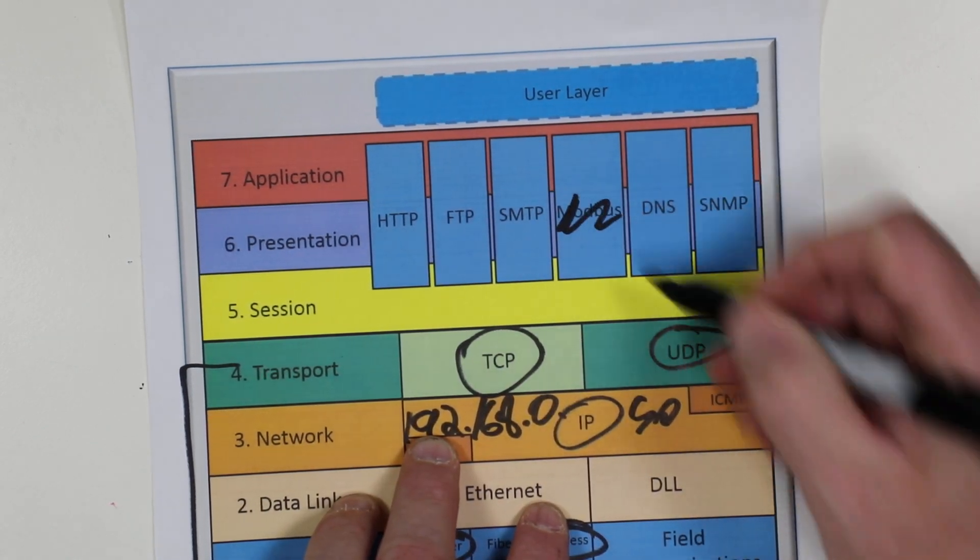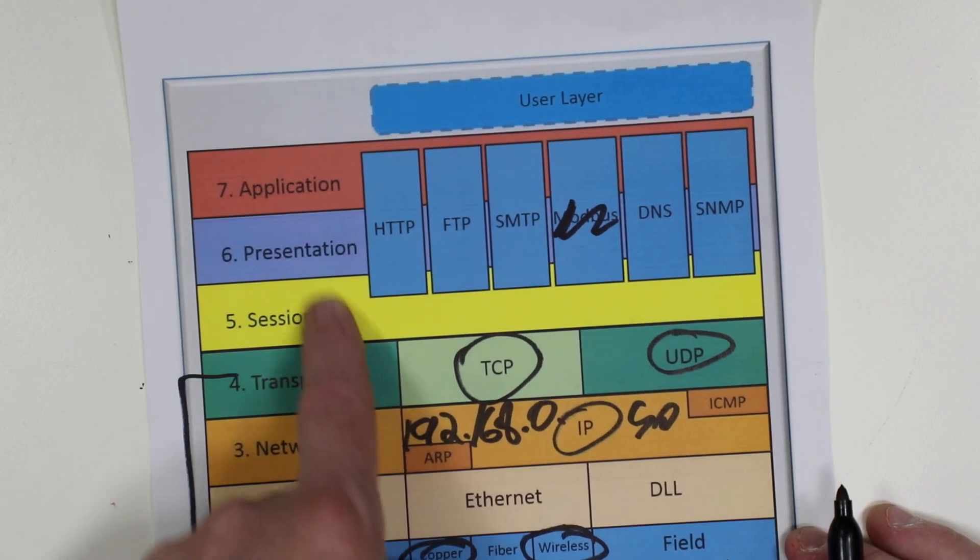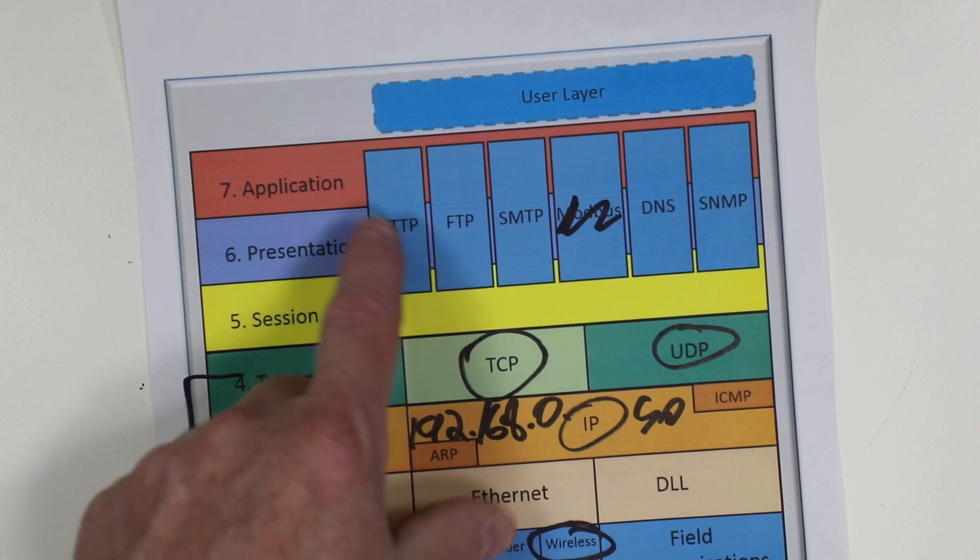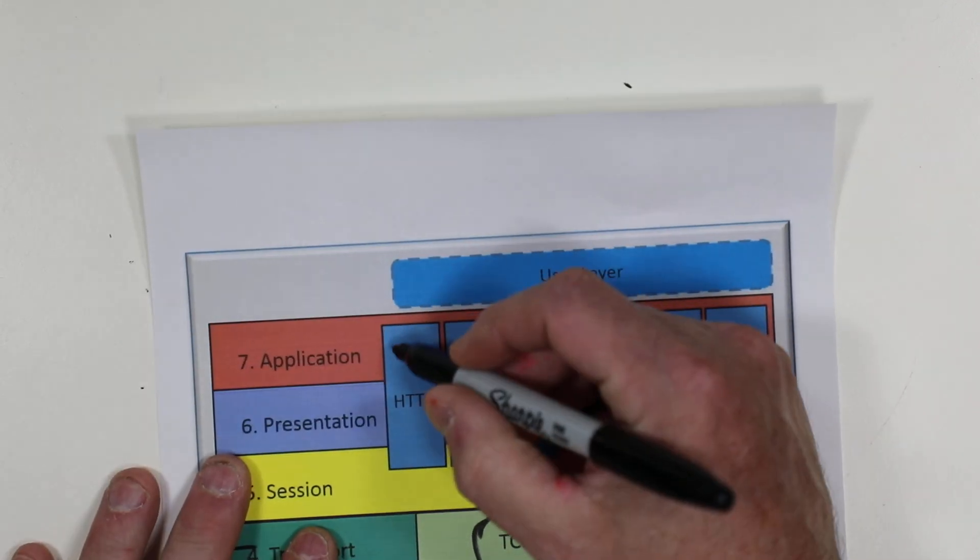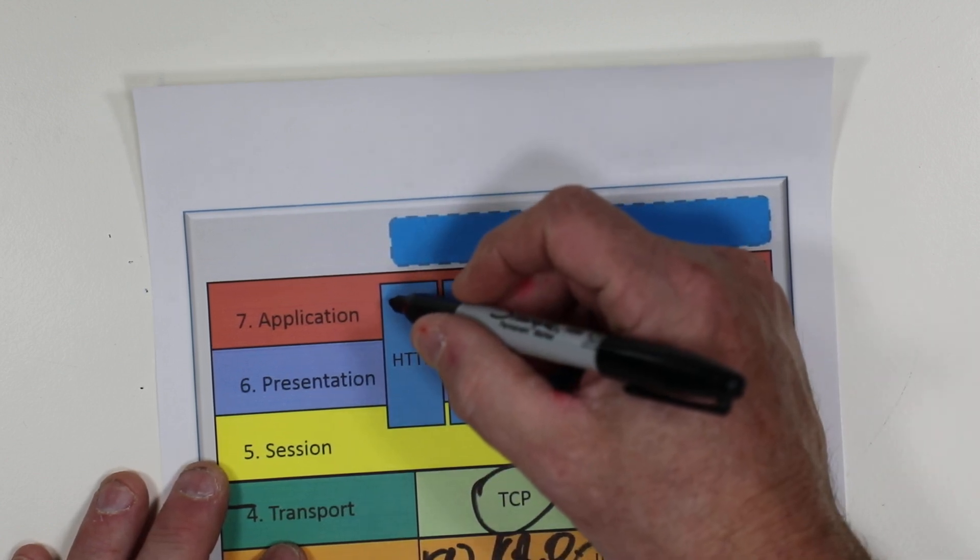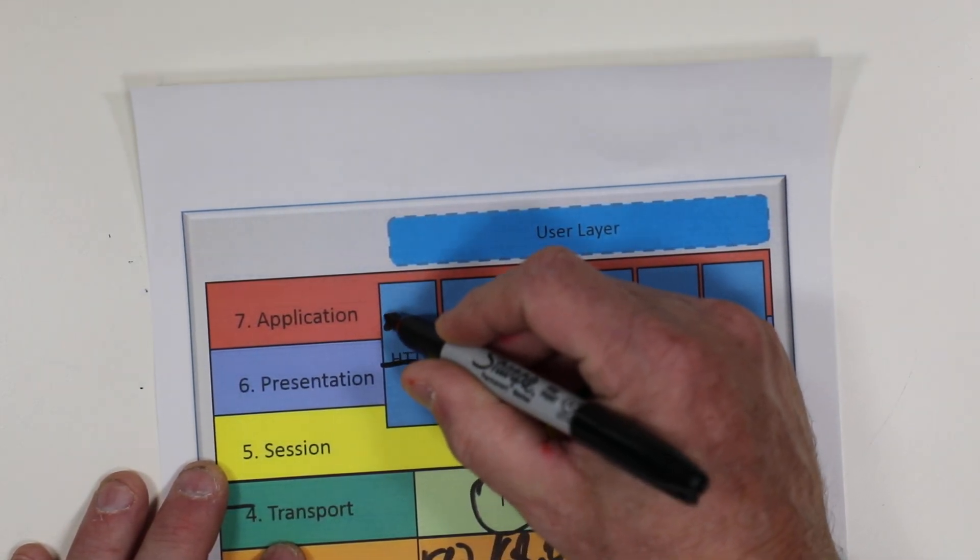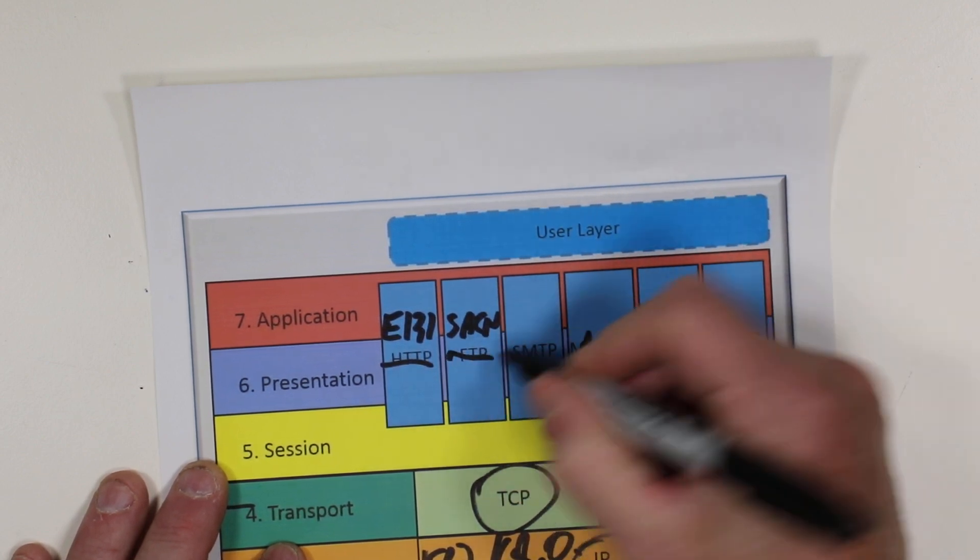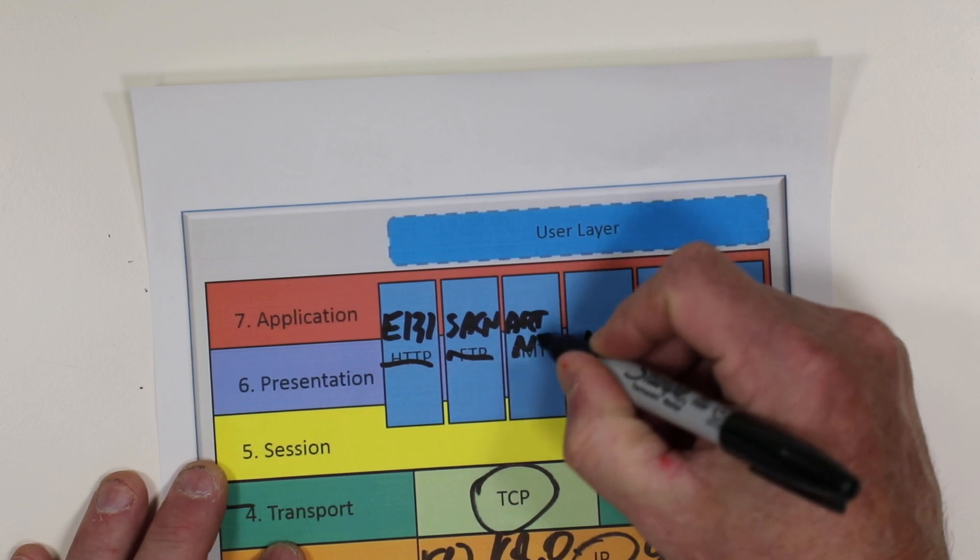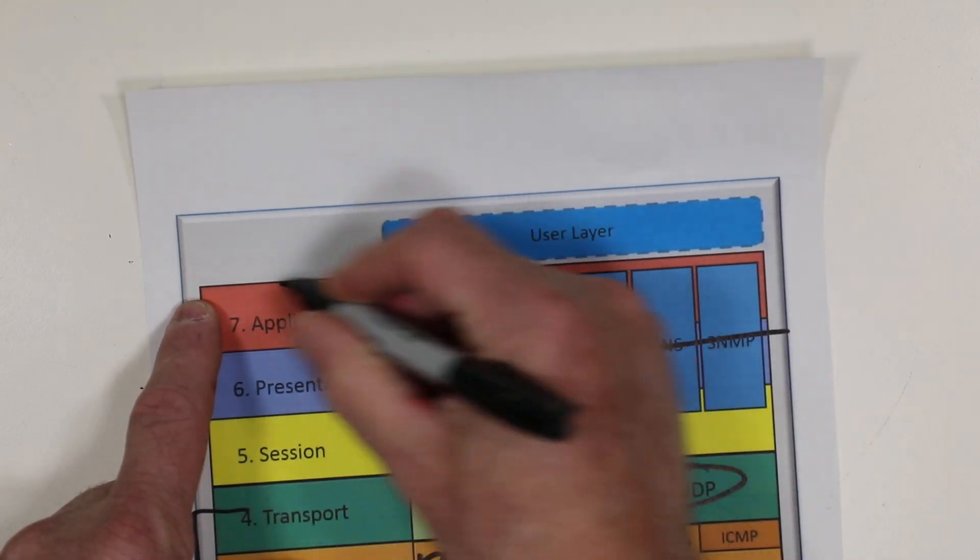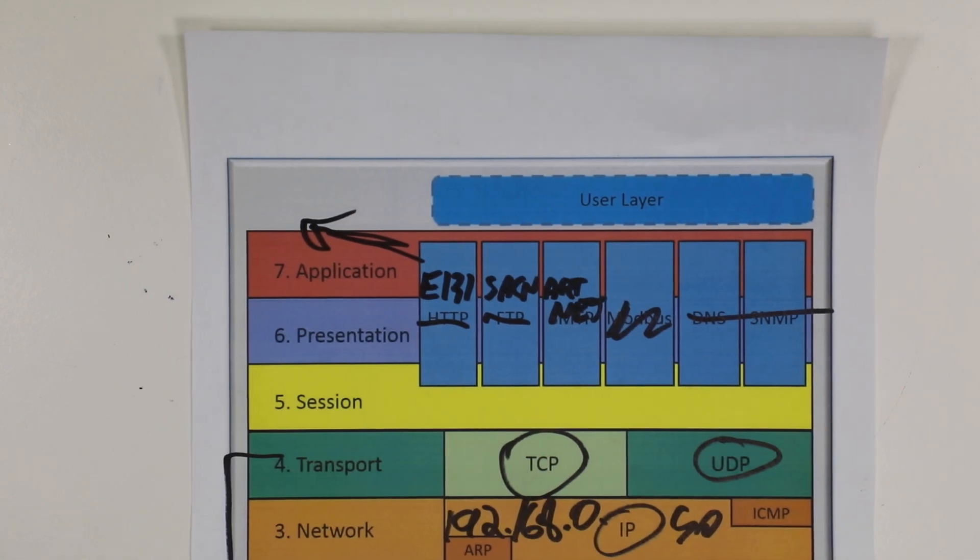Now, up here, we have the actual application session presentation layer. And so let's just kind of talk mostly about this application layer. So at the top, we do have things like HTTP, which is your web browser, but we also have those other protocols we were talking about, like E1.31 or SACN or ARTNET and such. So those are all sitting up here in this application level. And we'll talk about those in a moment in the next video.